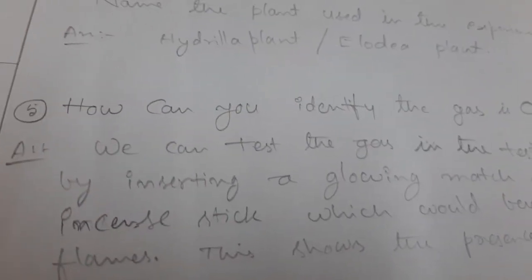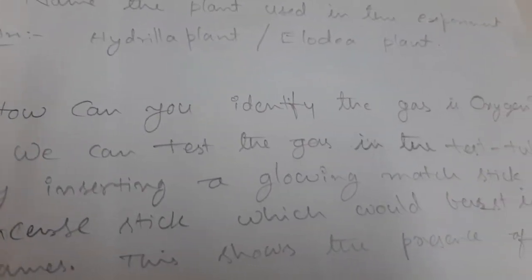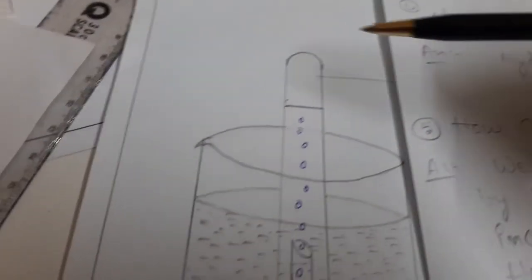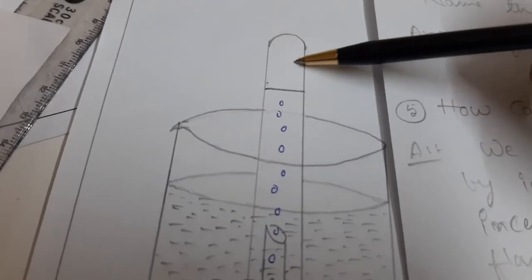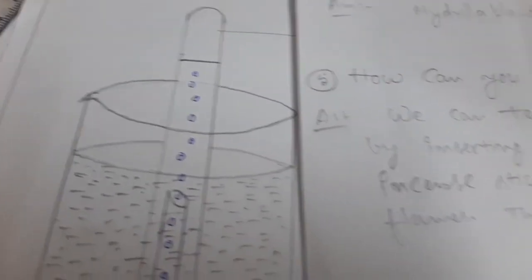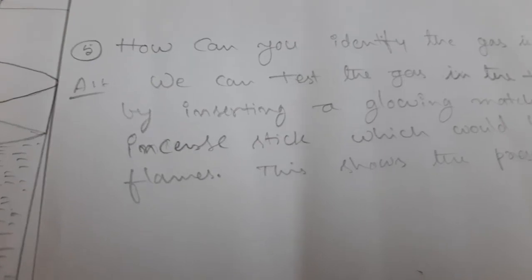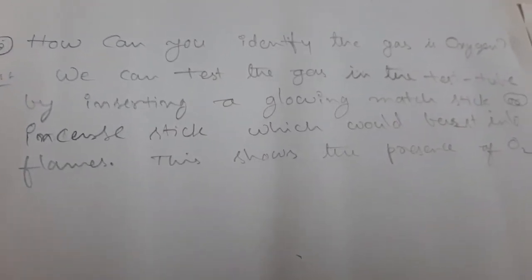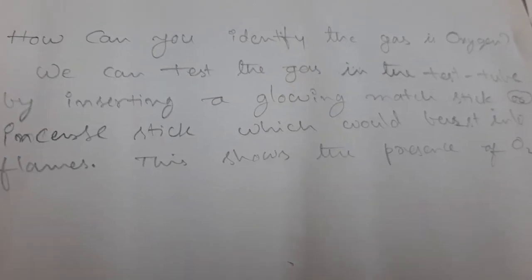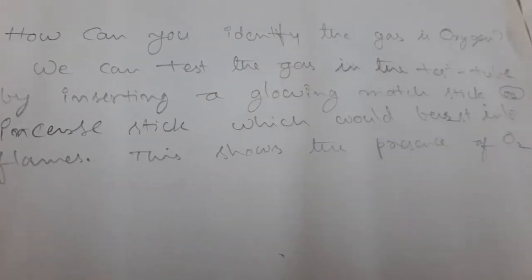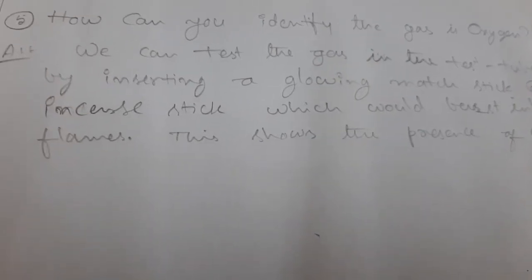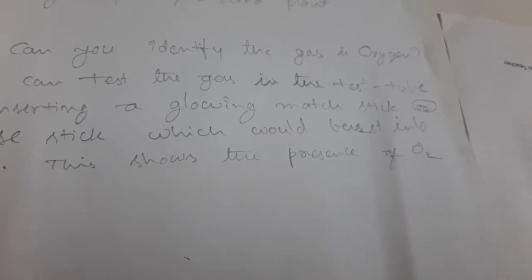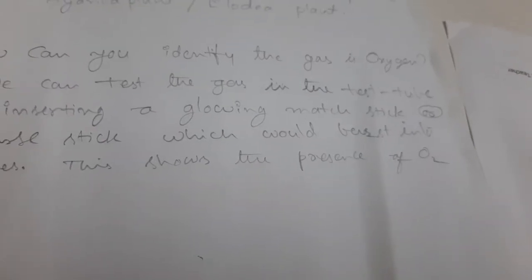Now next, fifth question: how can you identify the gas is oxygen? Here oxygen is there. How can we identify the gas? Answer: we can test the gas in the test tube by inserting a glowing mass stick or incense stick which would burst into flames. This shows the presence of O2, that is oxygen.